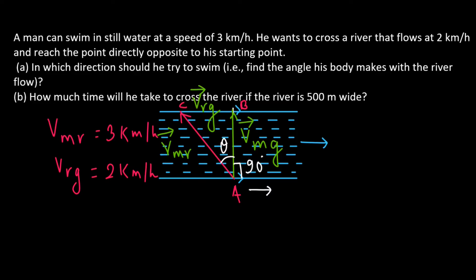To find theta, we will use the right angle triangle ABC. From this right angle triangle ABC, we see that sin theta is equal to CB by AC. Let's put the values. So, theta will be equal to sin inverse of 2 by 3, which is 41.8 degrees.